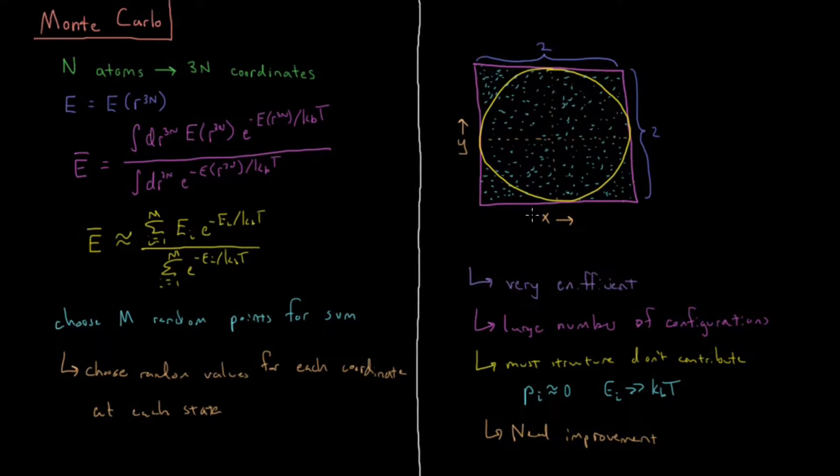But what's going on with this circle up here? So this circle is a demonstration of how Monte Carlo would work in general. And it's in a case where Monte Carlo does actually work quite well because most of these structures do contribute.